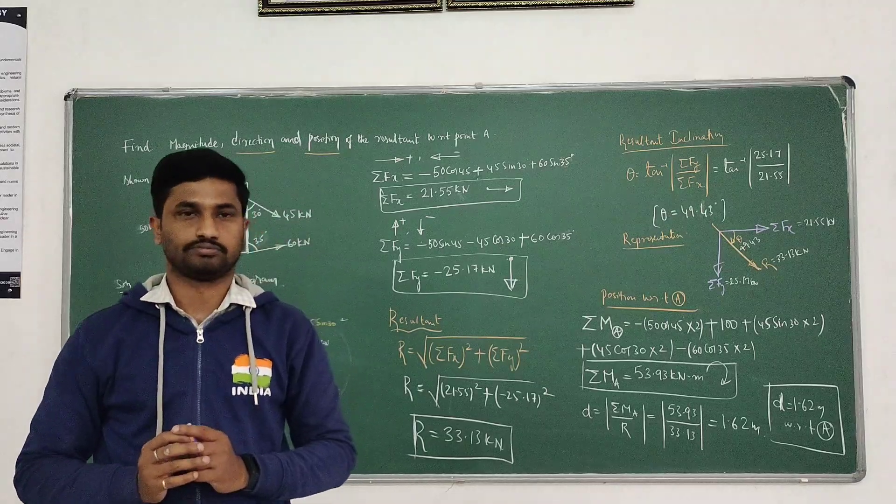This covers the entire problem. The procedure is: first write the free body diagram; compute sigma Fx; compute sigma Fy; compute the resultant and its inclination; draw the representation; and finally compute the position with respect to the given point. If no specific reference point is given, assume the bottom-left corner and compute the summation of moments to find the position. Thank you.